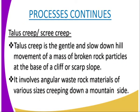There are a number of processes found in slow mass wasting, starting with the talus creep and the scree creep — that is one. We also have solifluction. We also have soil creep. All those are found in slow mass wasting.